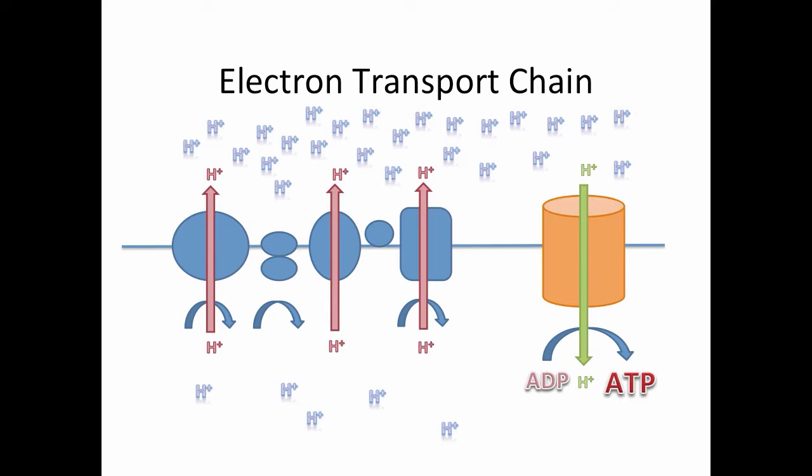A gradient can be visualized as more pressure on one side than the other for any particular atom, but in this case, it's hydrogen protons. Then, another protein uses the potential energy of this gradient to power itself and make ATP from ADP.